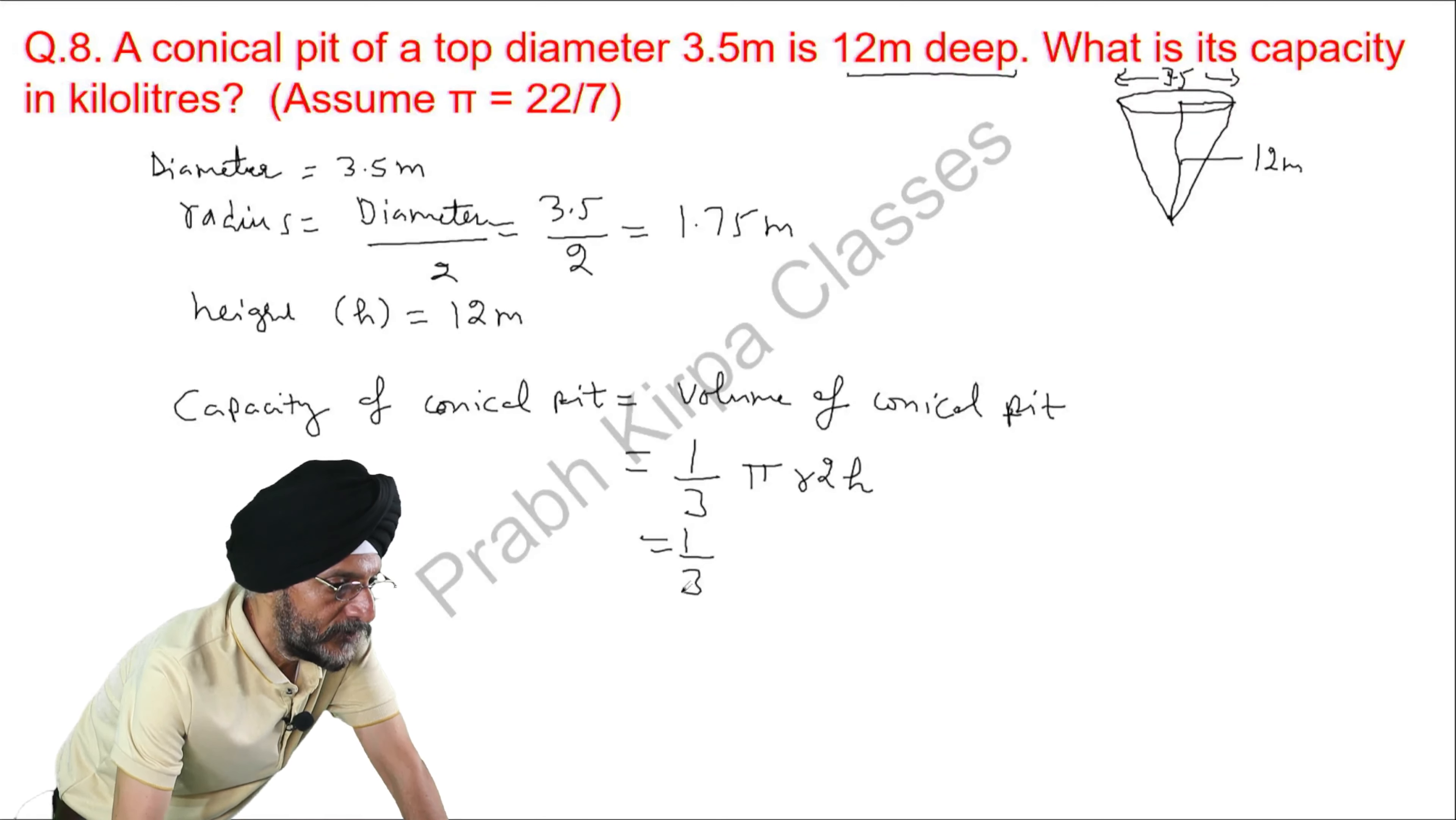We will fill the relevant values. What is the value of pi? It has been given as 22 over 7. What is the value of r? It is 1.75. What is the value of h? It is 12.